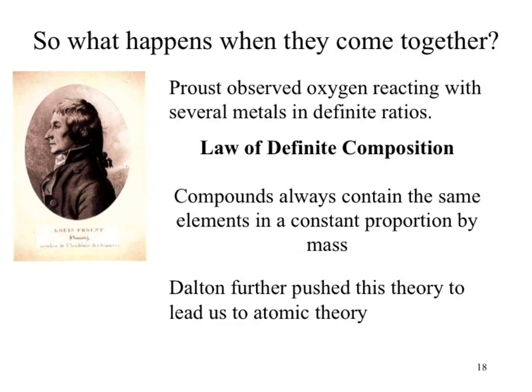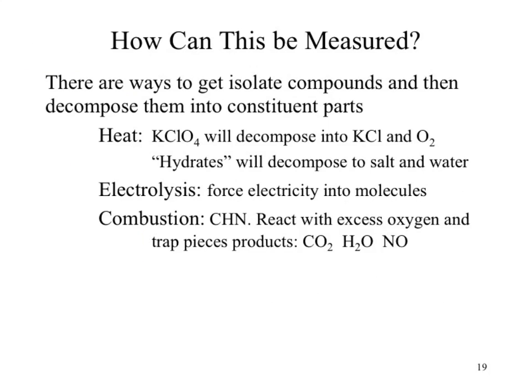How can these mass amounts be measured? A couple of techniques. We can look at heat — some compounds, when heated, decompose. For example, potassium chlorate (KClO4): when heated, it turns into potassium chloride (KCl) and oxygen gas. We can then weigh the oxygen gas and the potassium chloride to determine the mass ratio.